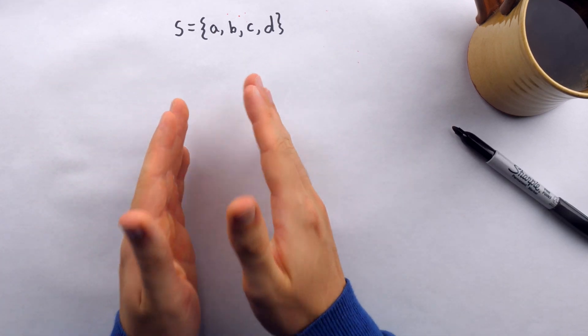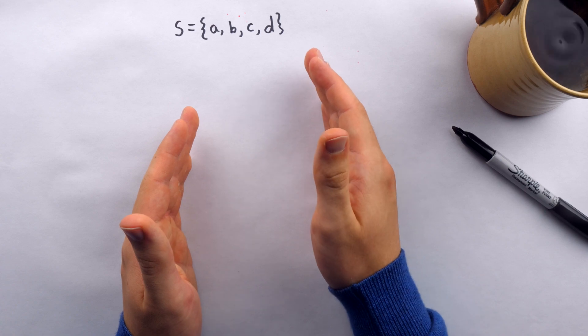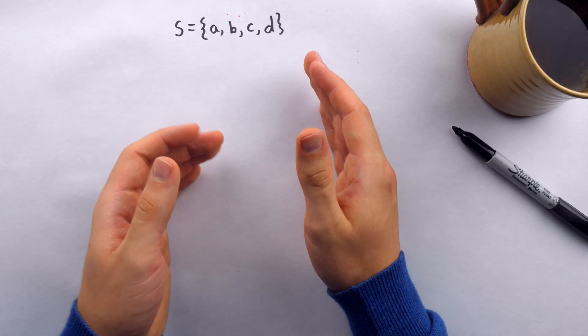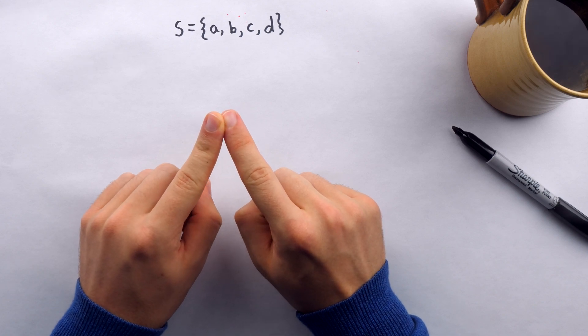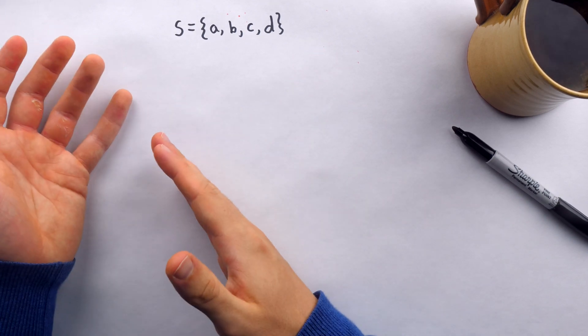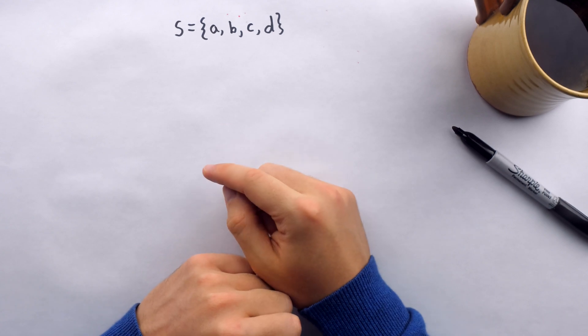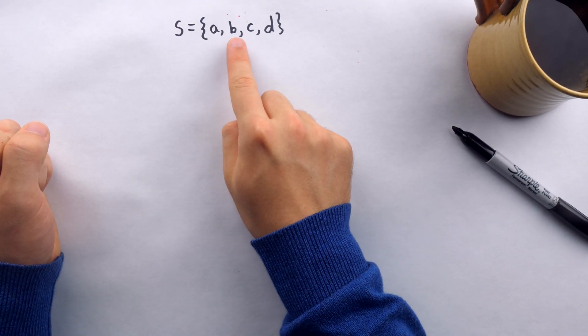Now to write out the power set in an orderly way and to make sure we don't miss any of the subsets, we should follow a particular pattern that I'm going to recommend. And I'll trace out that pattern with my fingers. So we're going to start with the empty set. And then we'll do the one element subsets: A, B, C, D, working from left to right.